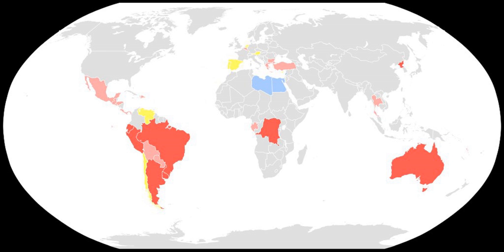Supporters of compulsory voting also argue that voting addresses the paradox of voting, which is that for a rational, self-interested voter, the costs of voting will normally exceed the expected benefits. The paradox disproportionately affects the socially disadvantaged, for whom the costs of voting tend to be greater. Australian academic and supporter of compulsory voting, Lisa Hill, has argued that a prisoner's dilemma situation arises under voluntary systems for marginalised citizens—it seems rational for them to abstain from voting, under the assumption that others in their situation are also doing so, in order to conserve their limited resources. However, since these are people who have a pronounced need for representation, this decision is irrational. Hill argues that the introduction of compulsory voting removes this dilemma.